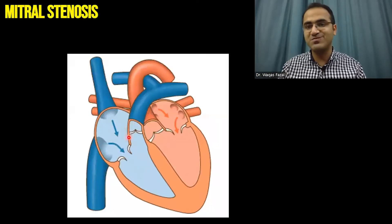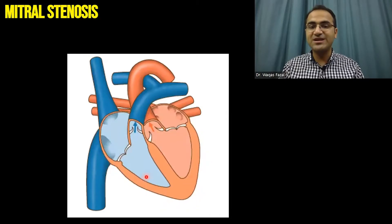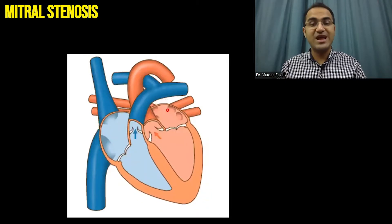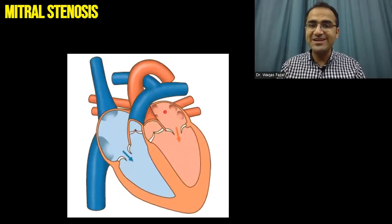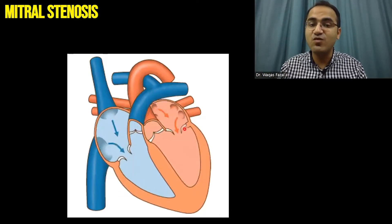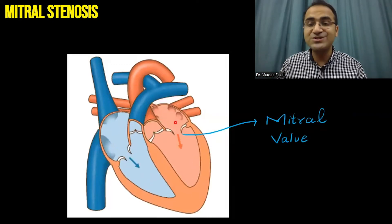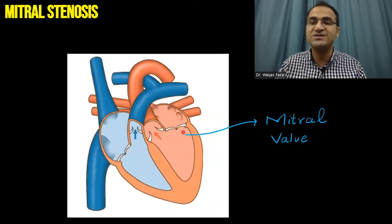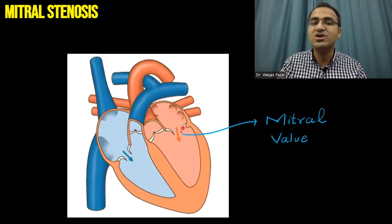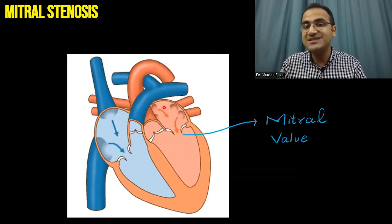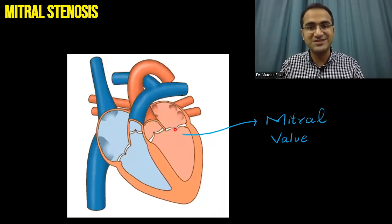Our heart has four chambers: two chambers on the right side — right atrium and right ventricle — and two chambers on the left — left atrium and left ventricle. Between the left atrium and the left ventricle, there is a valve called the mitral valve. In mitral stenosis, this valve gets stenosed; the circumference of this valve gets smaller, so the blood cannot easily travel from the left atrium to the left ventricle.